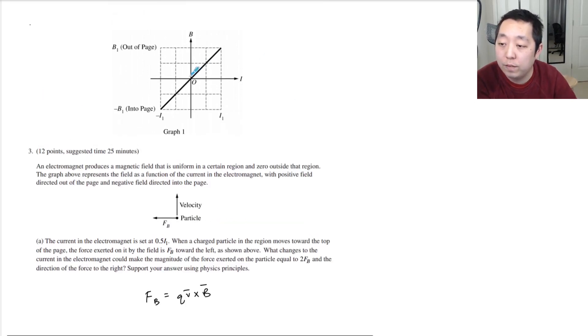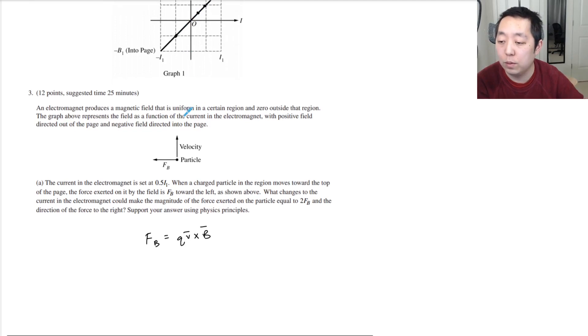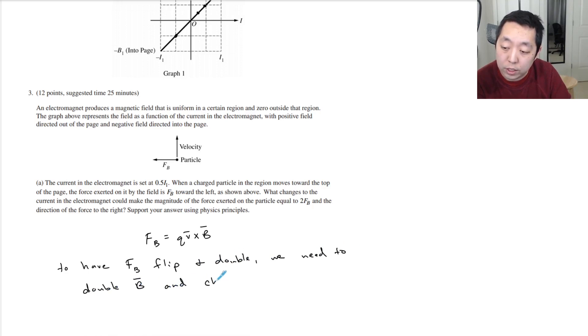The magnetic field is affected by the amount of current. We're at 0.5 I1, so we're right here. If I want to double the magnetic field, I need to go here. That will double the magnetic field, but I also want to flip the direction because I want to point right instead of to the left. So I actually want to go to negative I1.